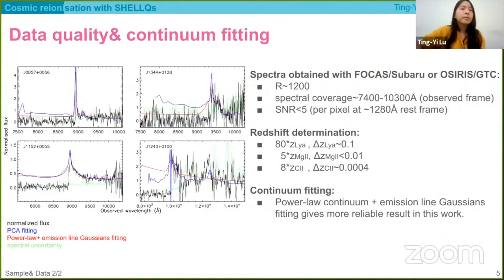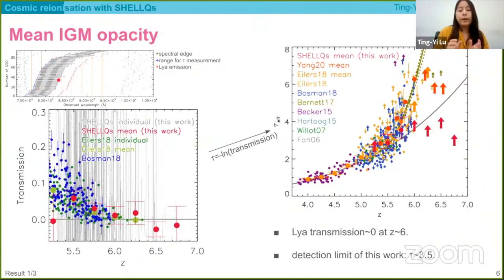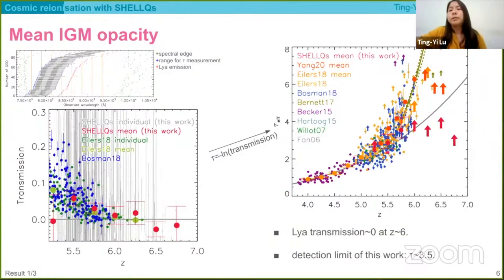Here I show the mean IGM opacity measured using the SHOLE quasars. This panel shows the spectral coverage of the SHOLE quasars — each horizontal line is one quasar. We measure the transmission in gray bins that are redward of Lyman-beta emission but shorter than the quasar near zones. The red dots show the mean Lyman-alpha transmission in those bins. We can see that the transmission drops to zero around redshift six, which is consistent with previous work and marks the tail end of reionization. Converting to optical depth, at higher redshift we cannot determine whether the optical depth is increasing further due to our detection limits.